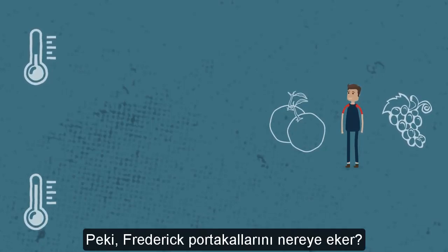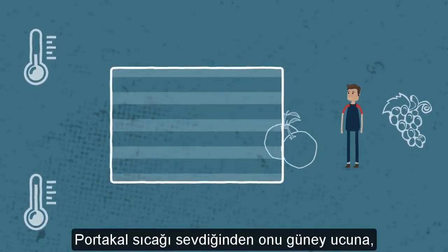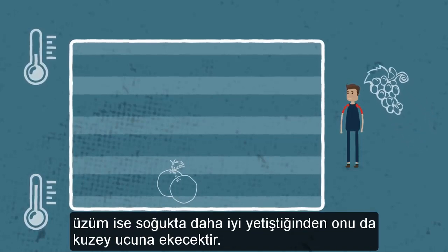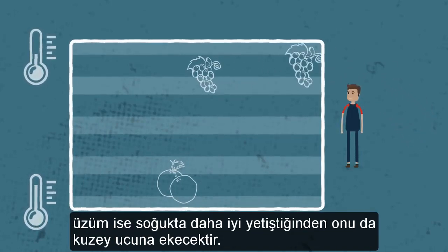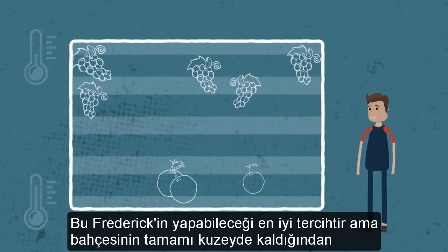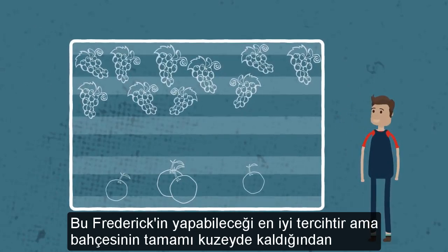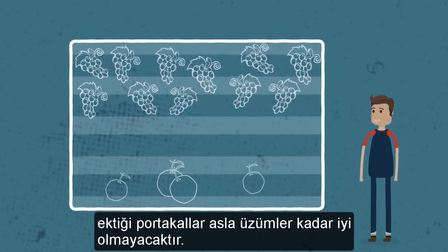So where's he going to plant his oranges? Well, oranges like the heat, so he'll plant them in the southern end of his garden. Grapes grow better without so much heat, so he'll plant them in the northern end. That's the best he can do, but his whole garden is still in a northern place, so his garden will never produce oranges as well as it produces grapes.